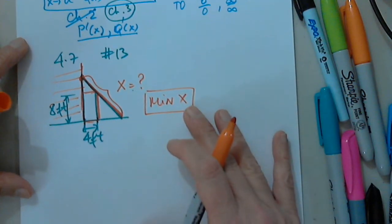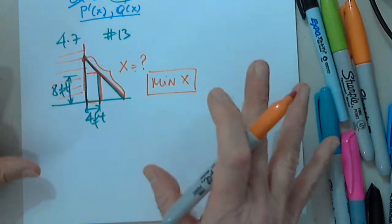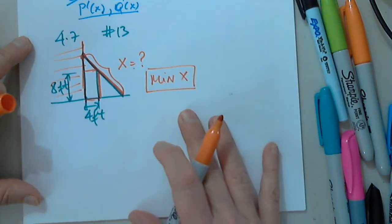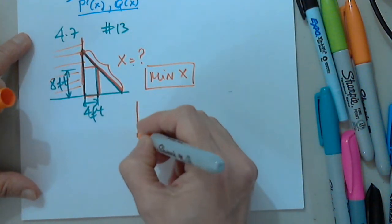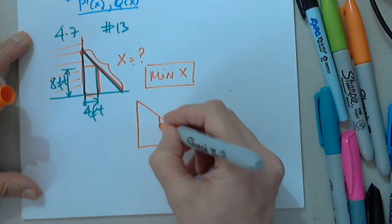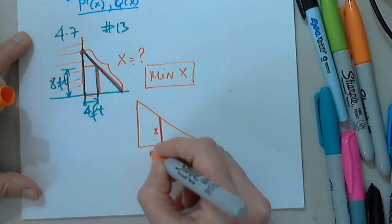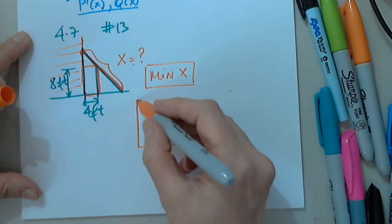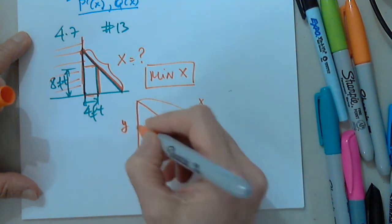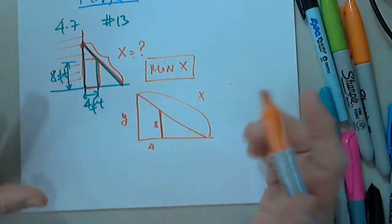Am I correct? Is there anything else given? No. So this is a typical situation where I have 8 for the fence height, 4 for the distance, and I label the sides X, Y, and W accordingly — two right triangles, a smaller one and a bigger one.